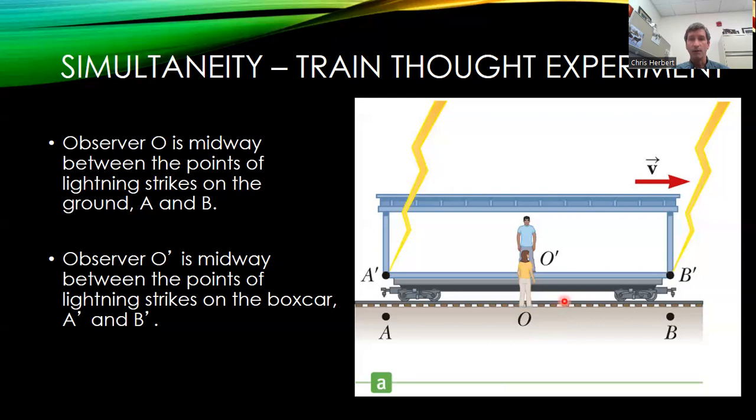However, they're not equivalent because O prime is moving at a rate of V compared to O. Now, what does O prime see when this event takes place or these two events take place? O saw them to be simultaneous.